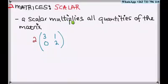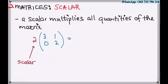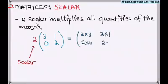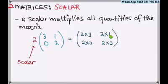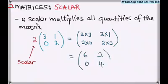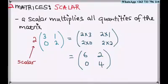Since a scalar multiplies all quantities of a matrix, let's multiply. Two will multiply three, two will also multiply one, two multiplies zero, and two multiplies two. The final answer will be six, two, zero, four. That's the effect of a scalar on a matrix — it multiplies all the quantities.